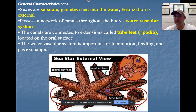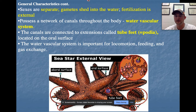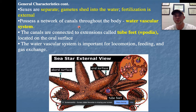More characteristics: echinoderms are dioecious and fertilization is external — there will be a video showing the spawning aspect of this. The water vascular system is a network of canals, and you'll want to know all the canals and the pathway water follows through them. There are seven structures in total that we'll get to.